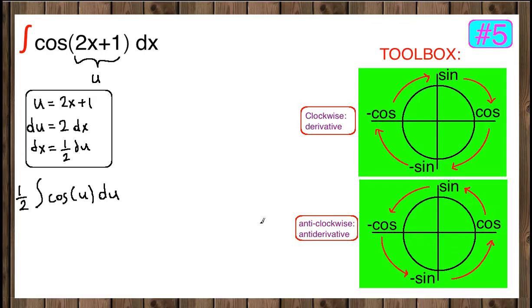So our cosine has positive sine as its antiderivative, giving us one-half times sine of u plus c. Now we substitute back: u was 2x plus 1, so one-half times sine of 2x plus 1 plus c is our final answer.